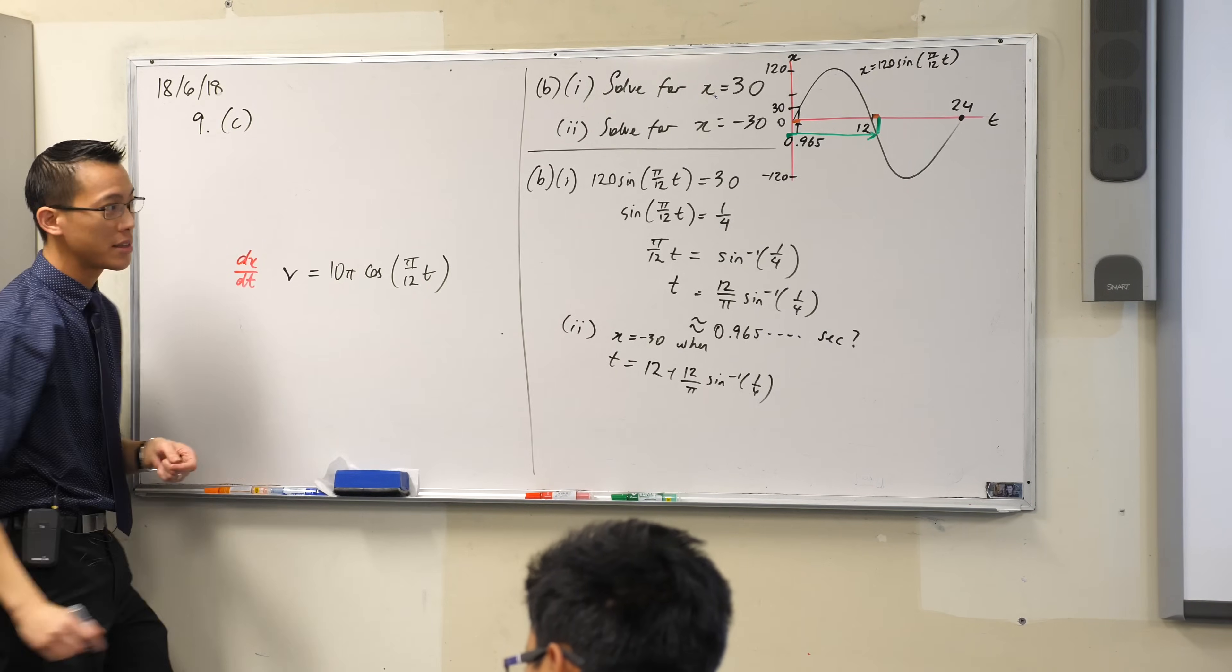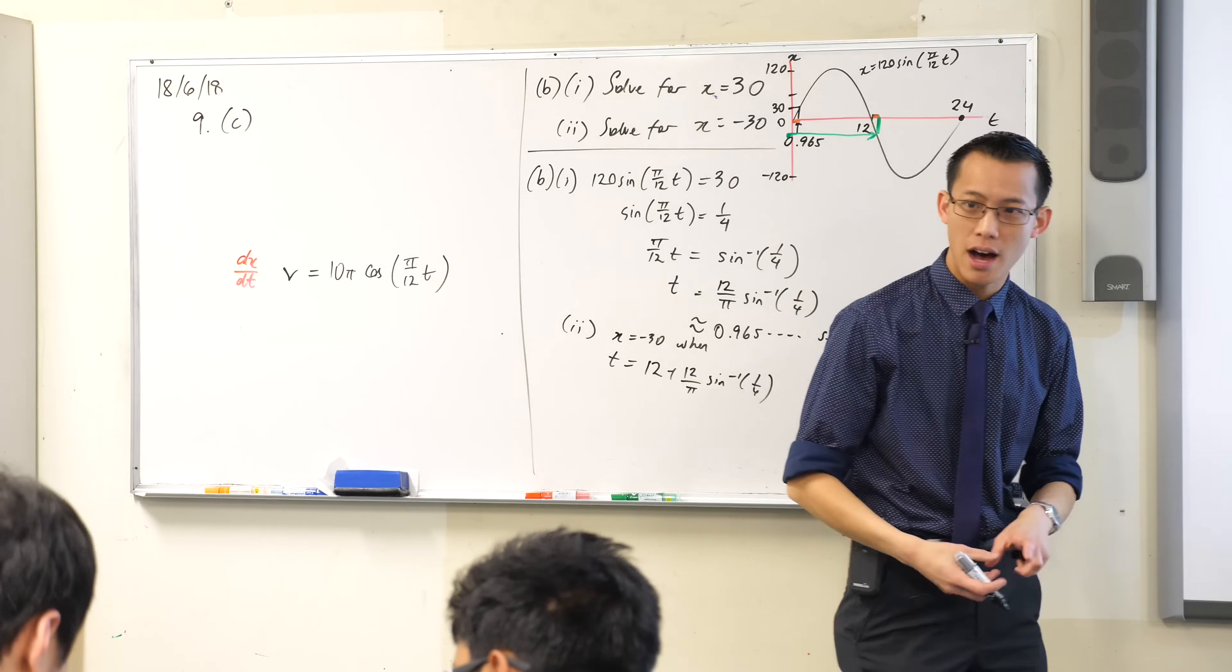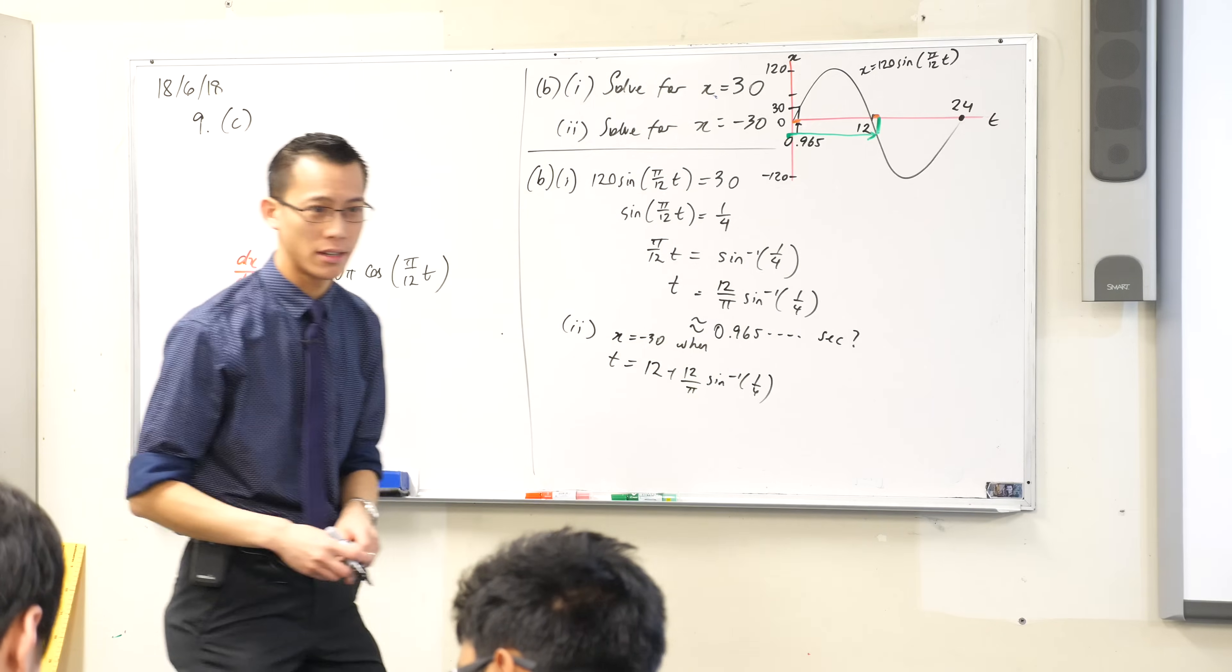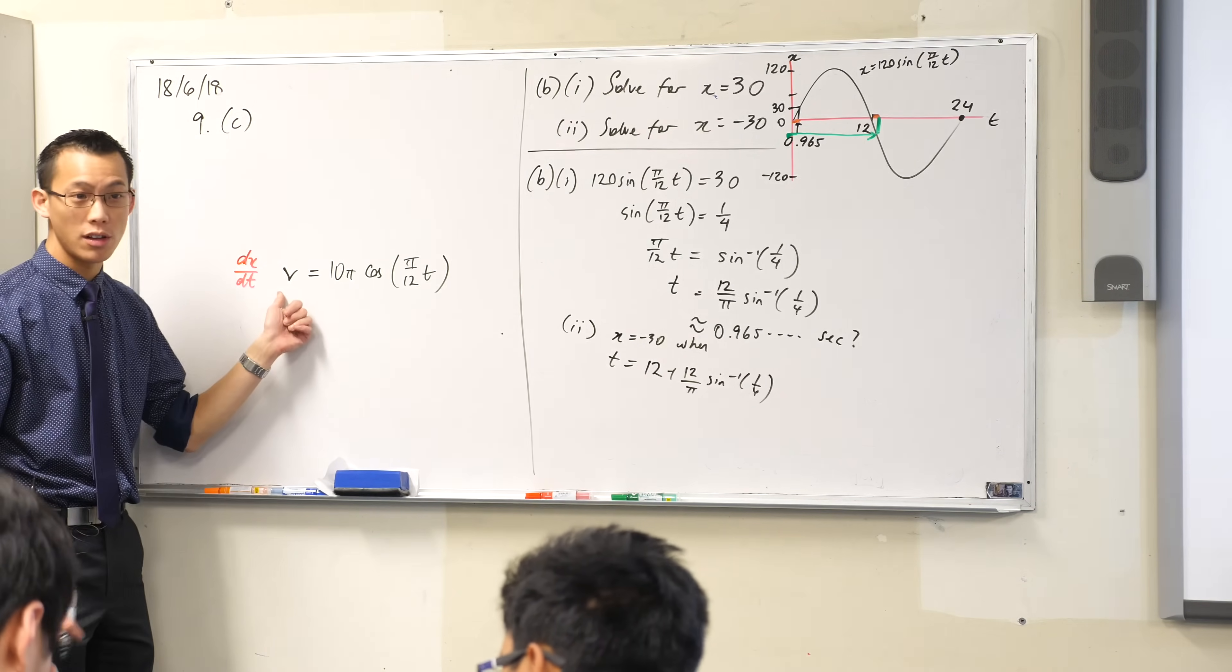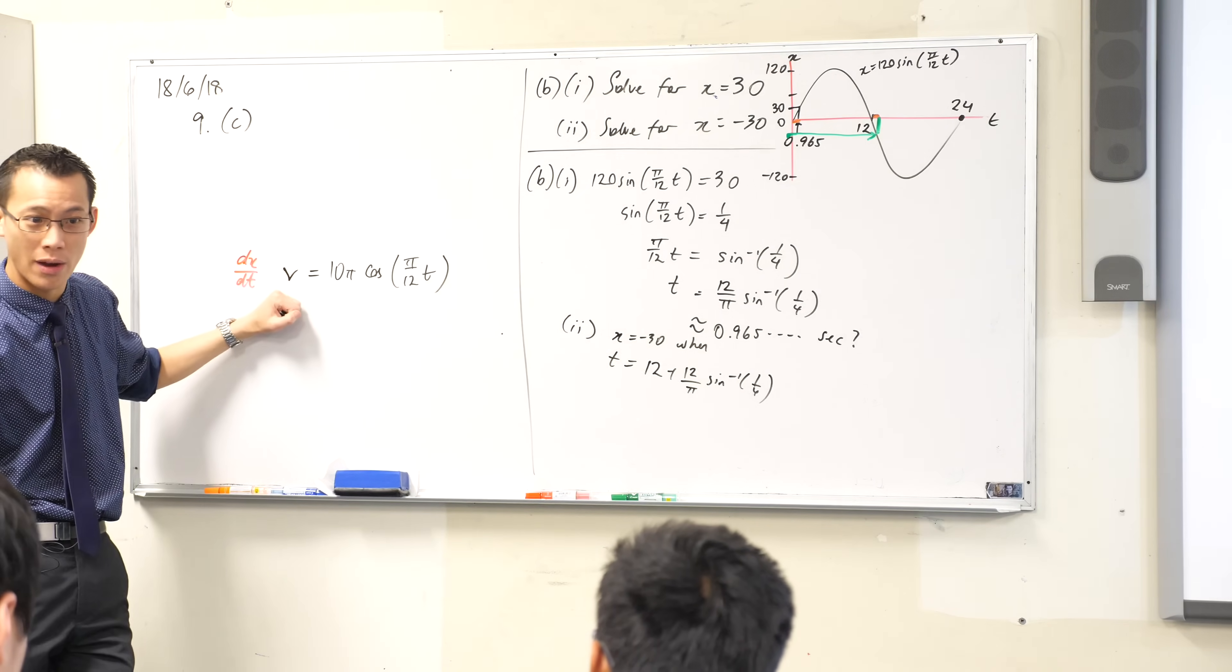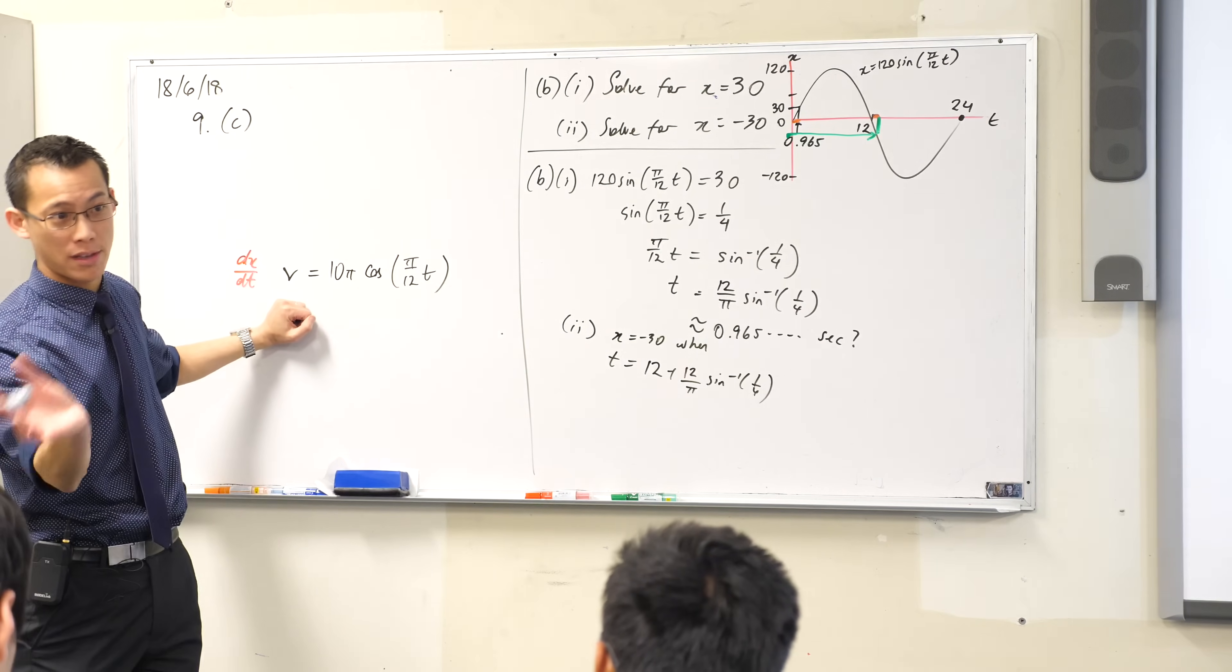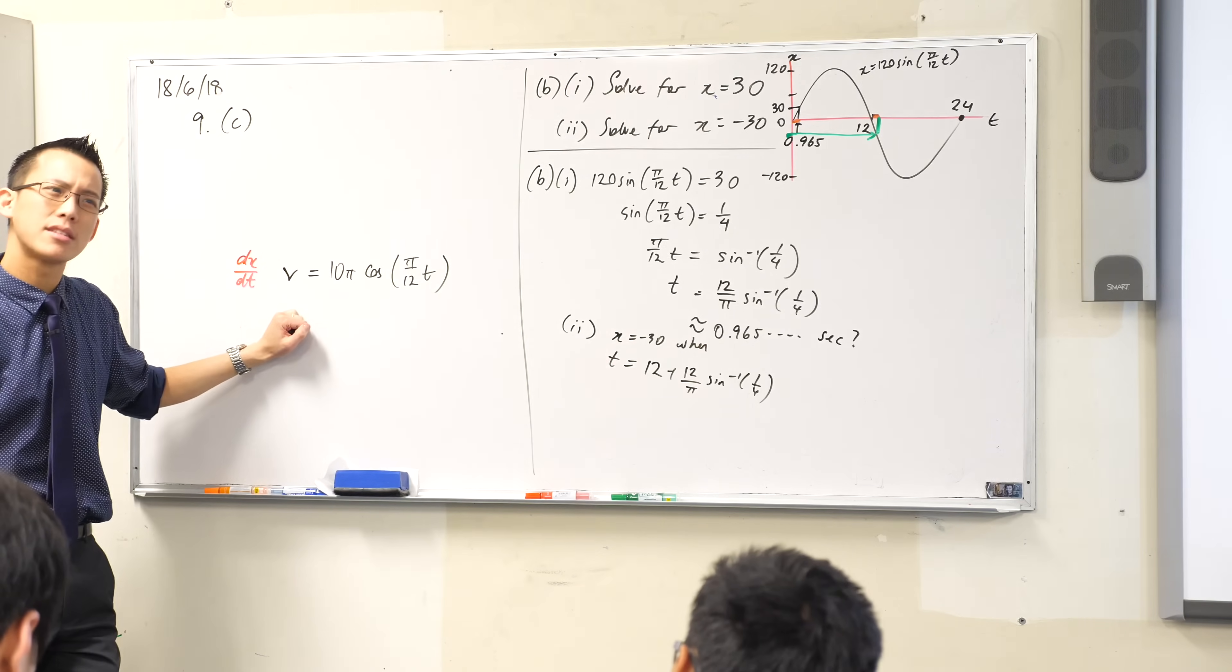Okay, so part C says find the first two times its speed is half its maximum speed. Its speed is half its maximum speed. Now I have a velocity equation here. It's not a speed equation, but I'm going to use the velocity equation and just think about it carefully with my pluses and minuses. That's the difference between velocity and speed. What is the maximum speed?